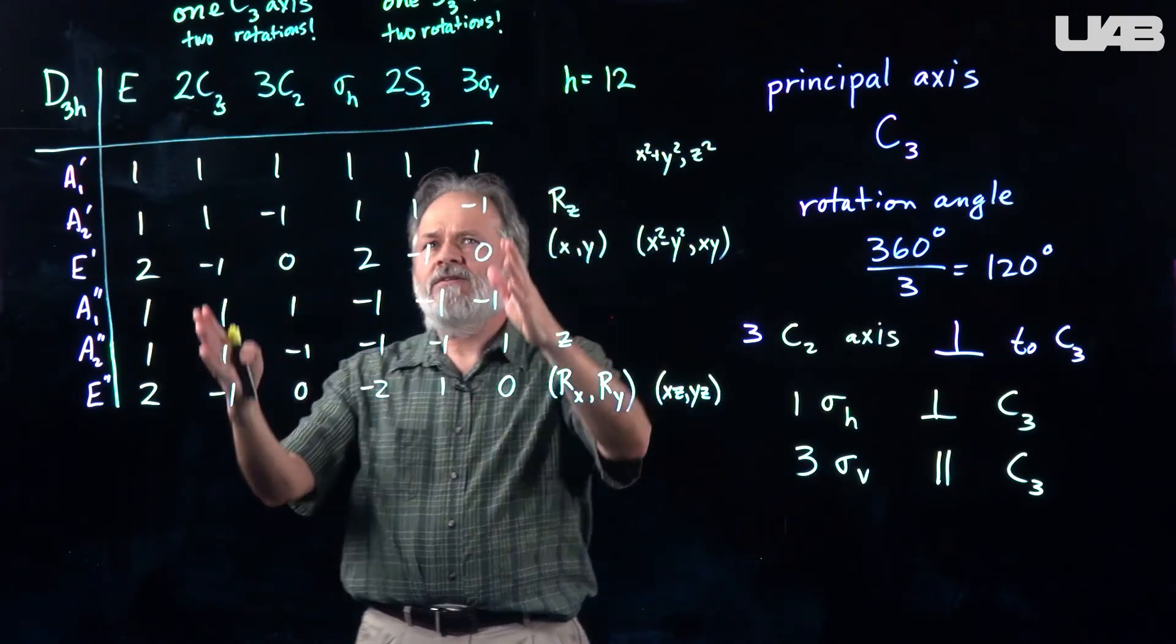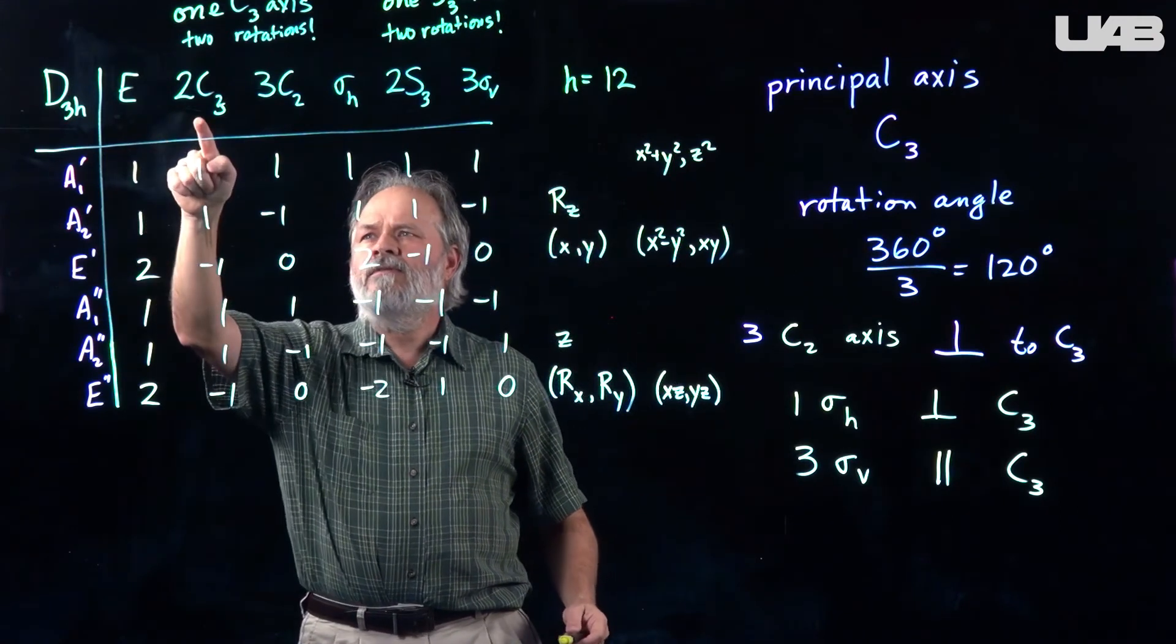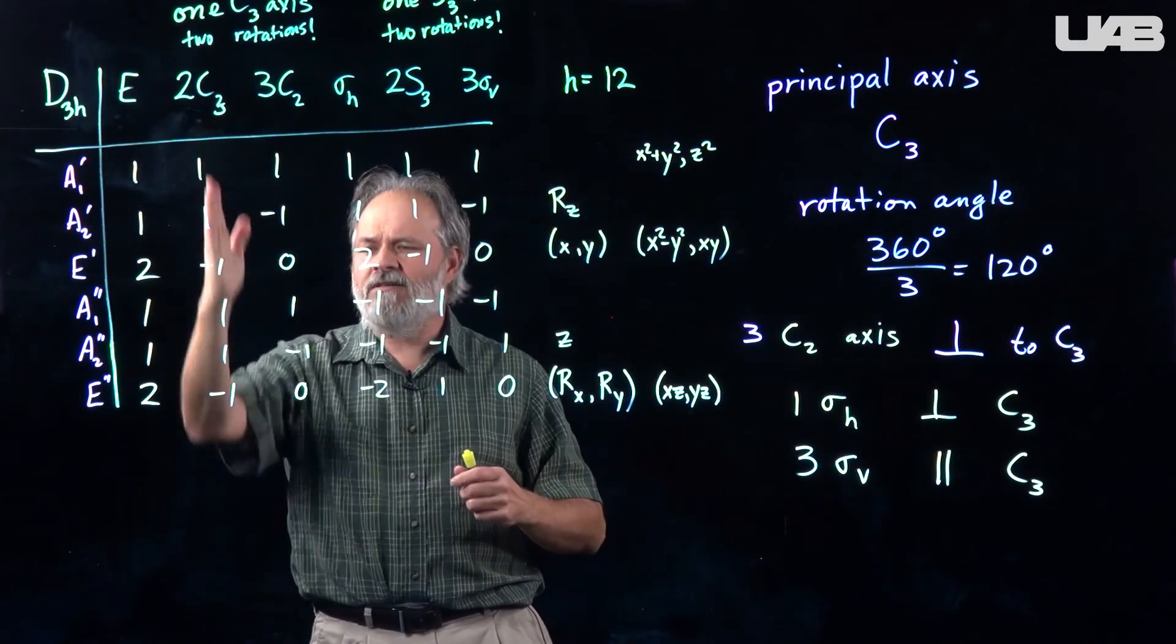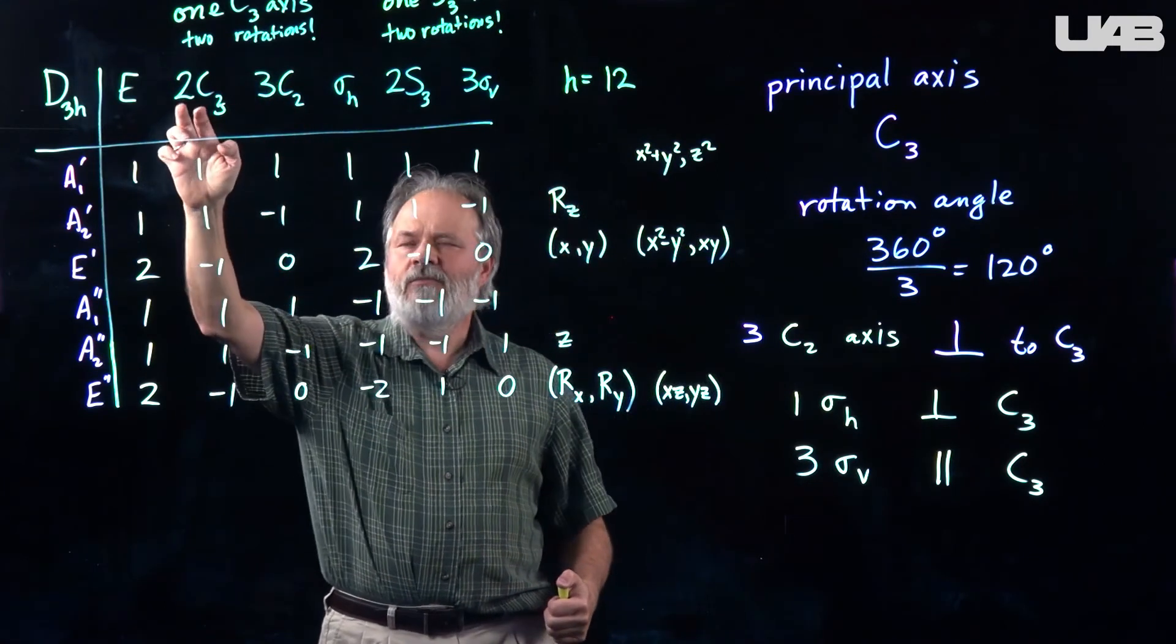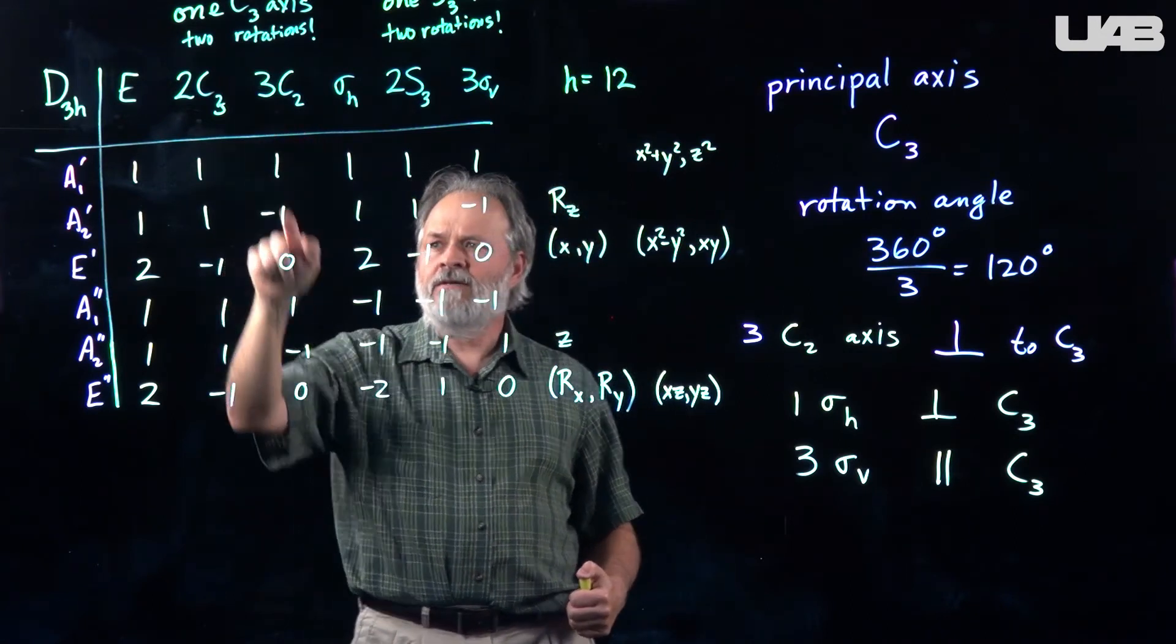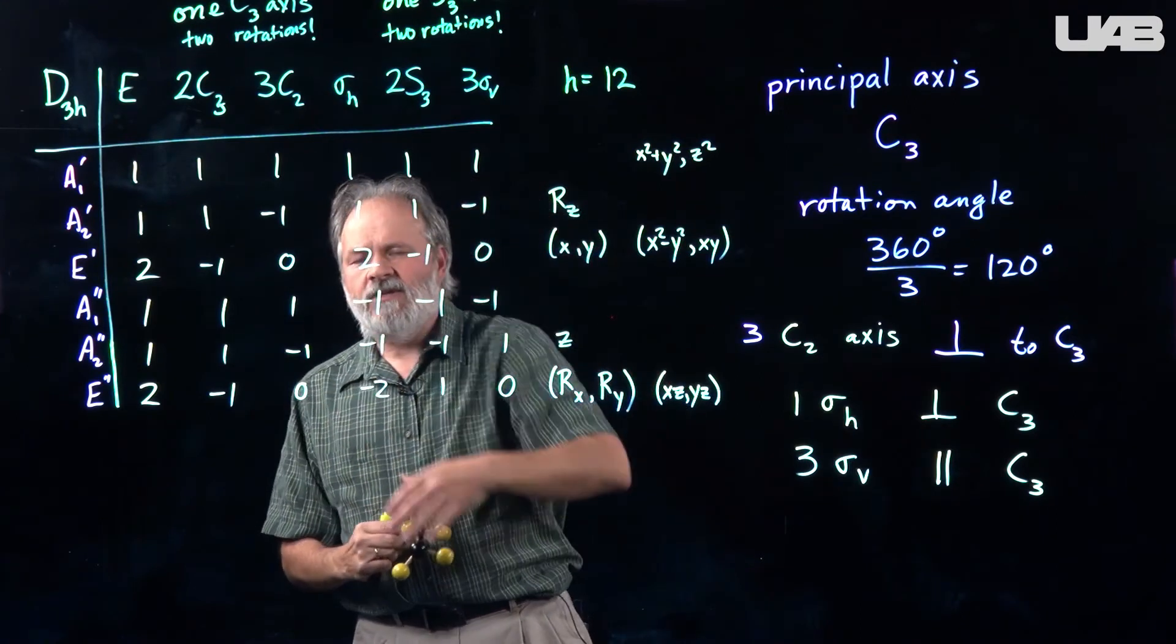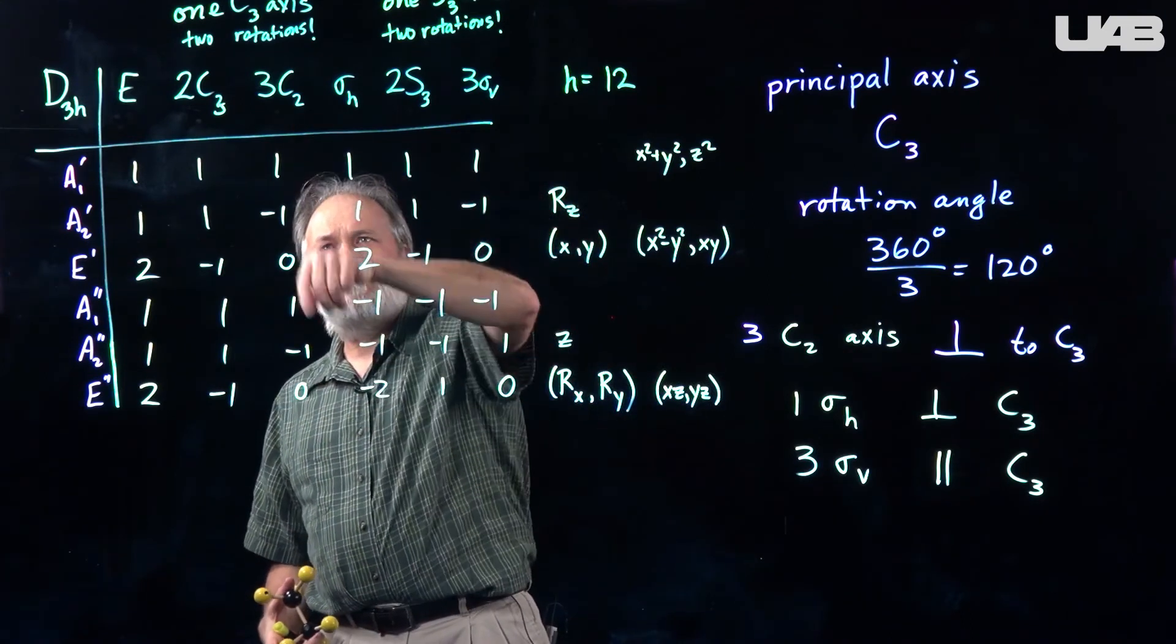The other thing about a character table is really twelve columns. But, the column for the C3 at 120 degrees and 240 degrees is really the same set of numbers. So, they don't write it twice. They just put a two up front. Same goes for this column here. All of the C2 axis rotations have the same numbers for the characters. And so, instead of writing that three times, they just say it's the same set of numbers that happens three times.